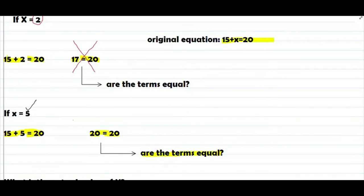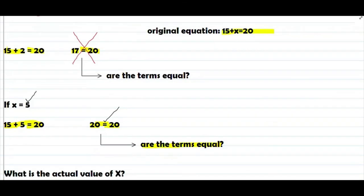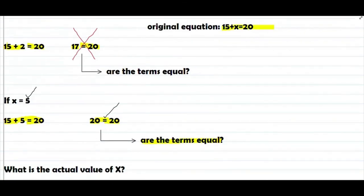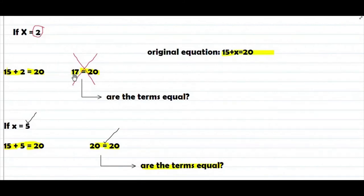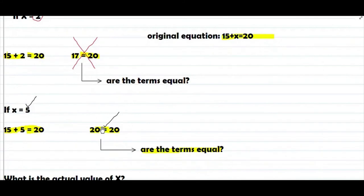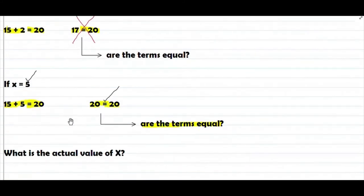Tama — tama din. Ang next is: what is the actual value of x? Ganun pa rin — malalaman natin yung actual value of x kung sino ang nagbigay ng tamang equation. If x equals to 2, mali siya. If x equals to 5, tama. Ang actual value of x ay yung nagbigay ng tama, which is yung 5.